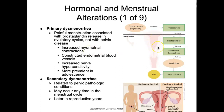We also see constricted endometrial blood vessels and increased nerve hypersensitivity, mostly due to prostaglandin F2-alpha, which is a potent myometrial stimulant and vasoconstrictor found in the secretory endometrium. These elevated levels eventually cause ischemia and endometrial shedding. This primary form of dysmenorrhea is more prevalent in adolescents.